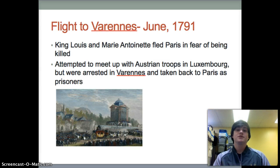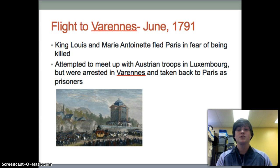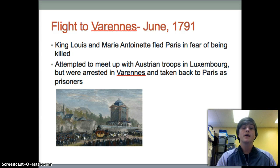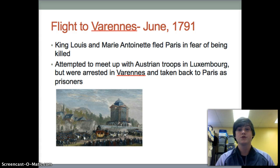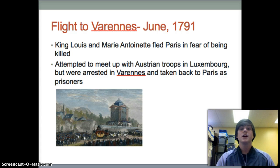I'm Matthew, and another main event of the French Revolution was the flight to Varennes in June of 1791. It was a failed attempt for King Louis and his wife, Marie Antoinette, to flee the city of Paris in fear of being killed. What they were trying to accomplish was to meet up with Austrian troops in Luxembourg, but they were arrested in Varennes and taken back to Paris, becoming prisoners of a city they once ruled.